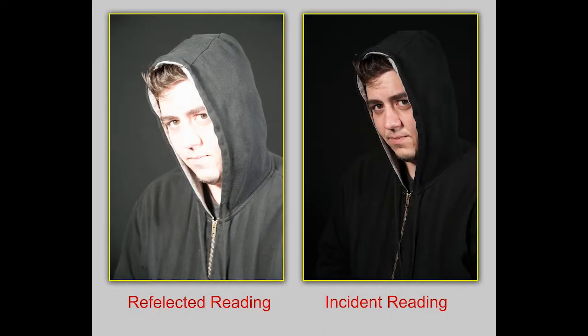Now let's look at those pictures to get a better understanding of incident versus reflective. Let's look at the results of the shots that we took in the studio. This is the first subject with a black background and a black hoodie, and the reflective reading on the right shows us exactly what happens when you do a reflective reading — it tries to make everything middle gray and very badly overexposes the picture. On the right, we see the incident reading.